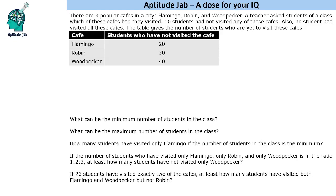Hello everyone, welcome to Aptitude Jab. This is a set based on Venn Diagrams. It says that there are three popular cafes in a city: Flamingo, Robin and Woodpecker. A teacher asked students of a class which of these cafes they had visited. Ten students had not visited any of these cafes. No student had visited all three cafes, and a table gives the number of students who are yet to visit these cafes.